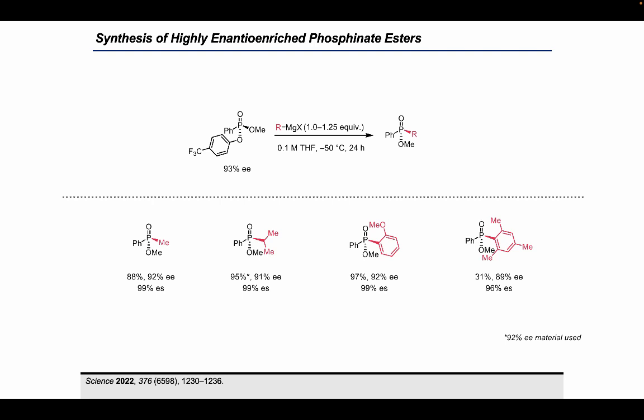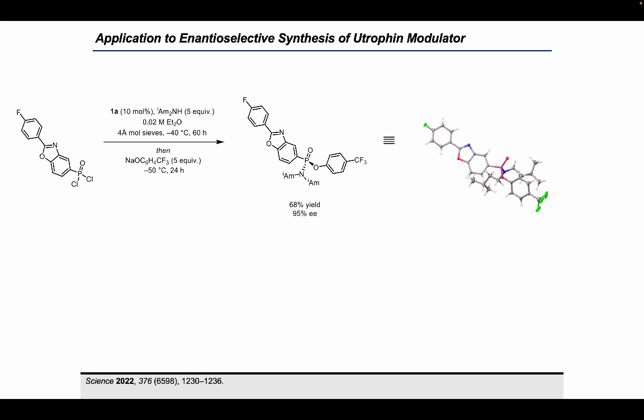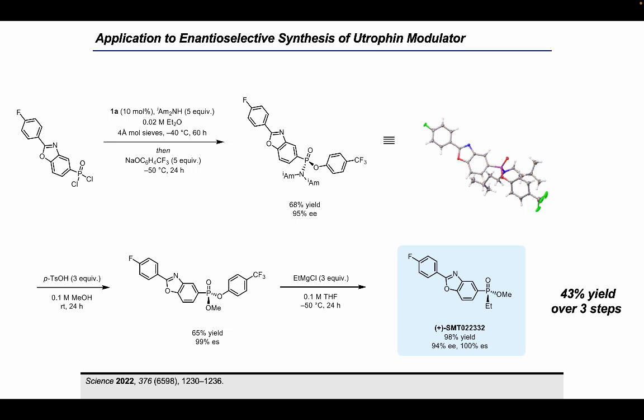We applied this three-step synthesis of highly enantioenriched phosphonate esters to the synthesis of a phosphonate-based eutrophin modulator, reported as a potential treatment for Duchenne muscular dystrophy. Subjection of the dichloride to the reaction conditions and subsequent reaction with sodium para-trifluoromethyl phenoxide yielded the phosphonamidate in 95% ee and 68% yield as a white crystalline solid, enabling confirmation of absolute configuration by X-ray crystallography. Next, treatment under acidic conditions in methanol allowed enantiospecific installation of the methoxy group, and finally displacement of the aryloxy group by ethylmagnesium chloride installed the ethyl group, completing the synthesis of the eutrophin modulator in 94% ee and 43% overall yield over three steps.